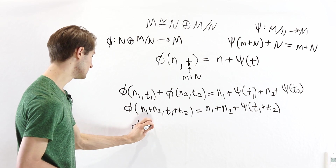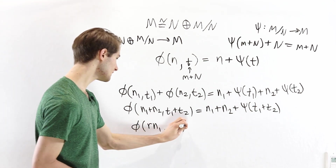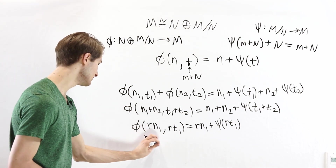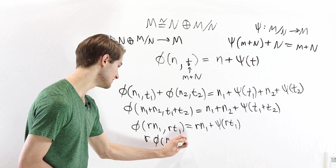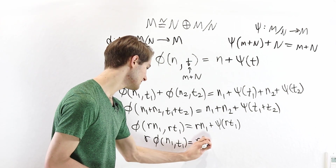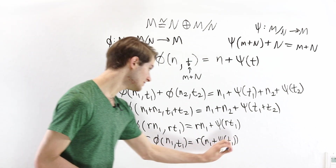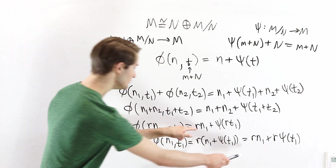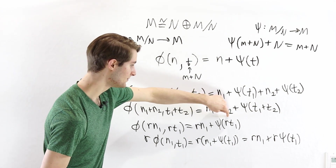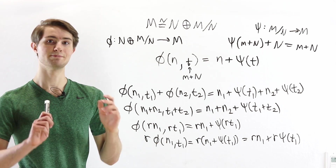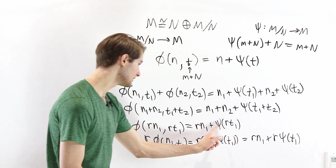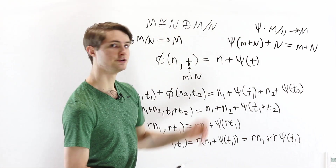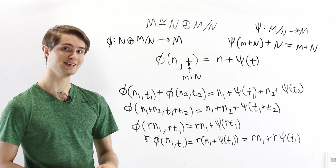Similarly, looking at φ(rn₁, rt₁), this gives rn₁ + ψ(rt₁). On the other hand, r · φ(n₁, t₁) = r · (n₁ + ψ(t₁)) = rn₁ + r · ψ(t₁). So we need ψ(r · t₁) = r · ψ(t₁) — that's the condition for a module homomorphism; ψ needs to be R-linear, meaning we can pull the r outside of ψ. So for φ to be a homomorphism, ψ must also be a homomorphism. That's going to be our additional condition on the splitting map.